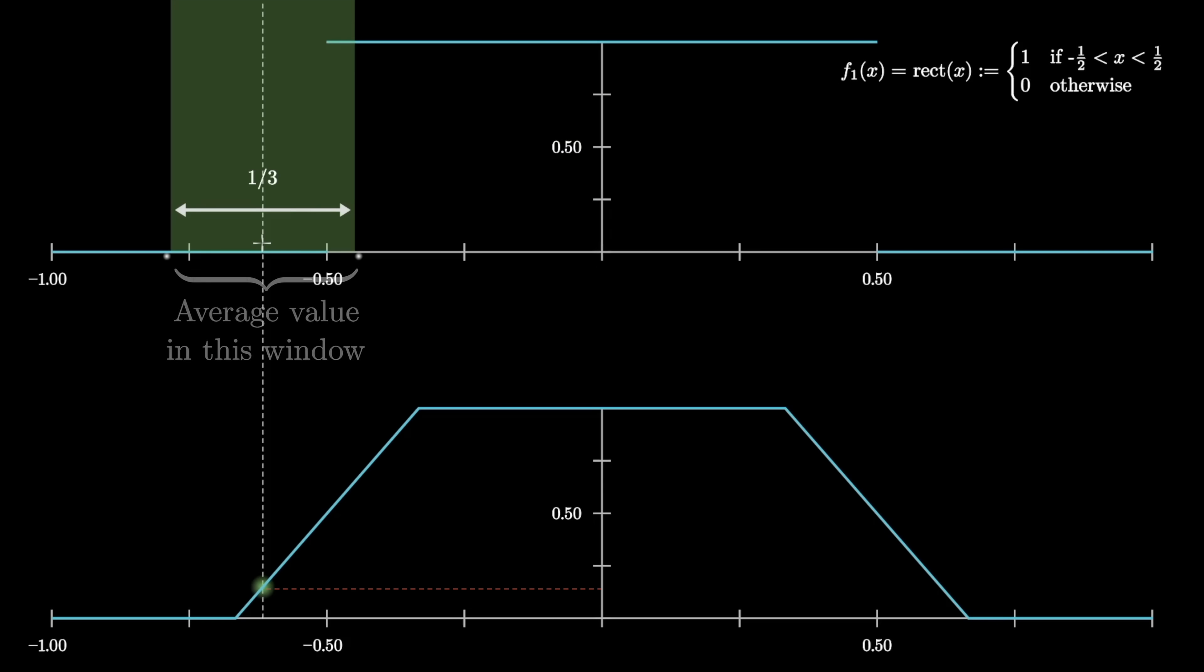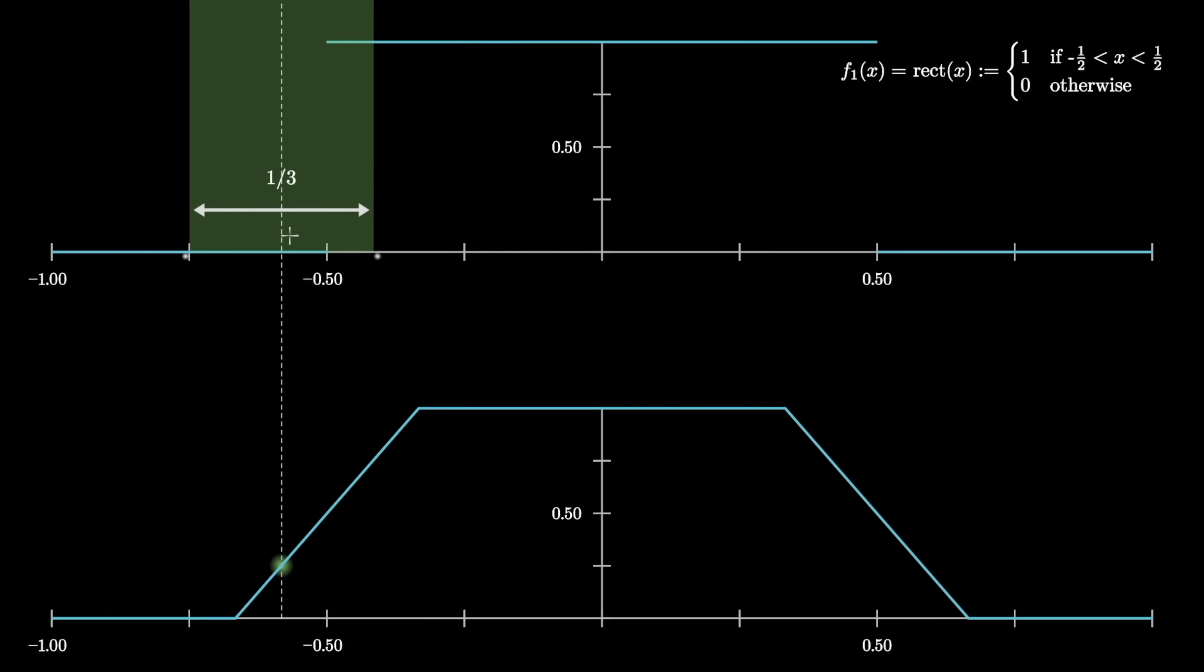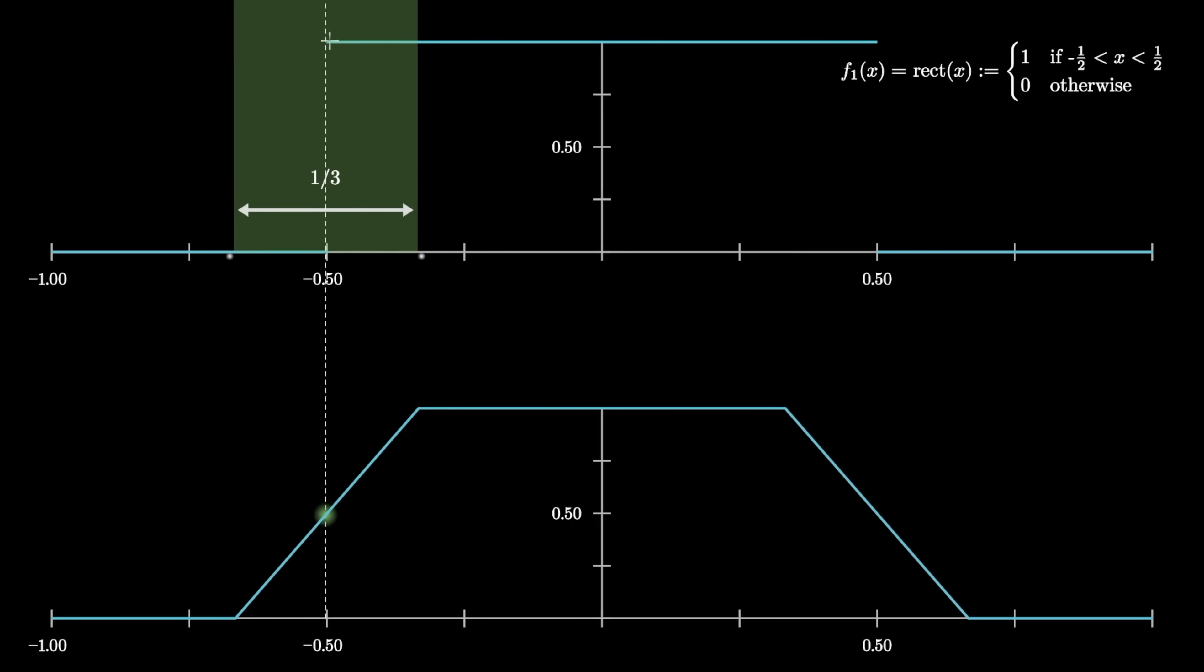So for example, when the window is far enough to the left, every value inside it is 0, so the graph on the bottom is showing 0. As soon as that window starts to go over the plateau a little bit, the average value is a little more than 0, and you see that in the graph below. And notice that when exactly half the window is over that plateau at 1, and half of it is at 0, the corresponding value in the bottom graph is 1 half, and you get the point.